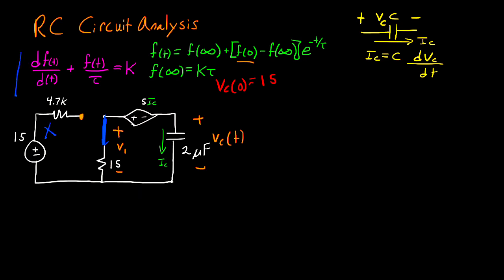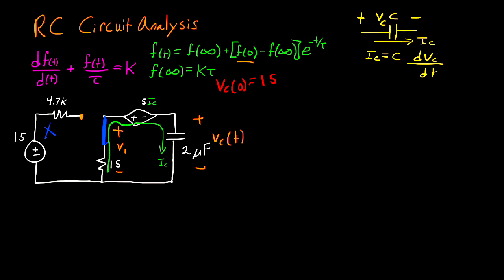The goal is to create the standard form equation but with vc of t in place of f of t. To begin the circuit analysis, I label the component currents. ic flows through the capacitor and must continue through the other components in that direction, since there's nowhere else for the current to go. I label the ground, call this node v1 referenced to ground, and this node vc. Everything at this point is a function of time.